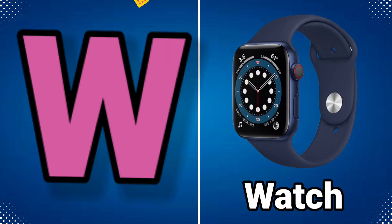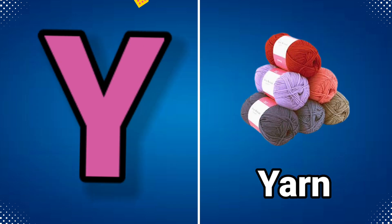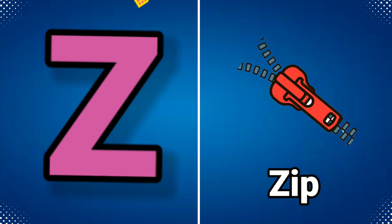W for watch, X for x-ray, Y for yarn, Z for jeep.